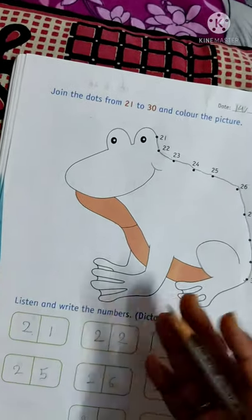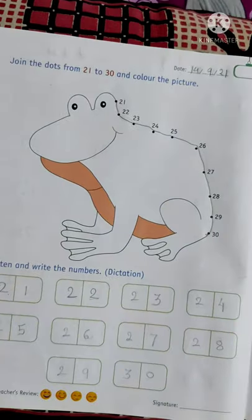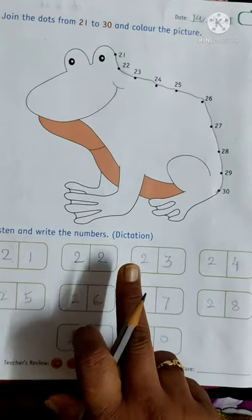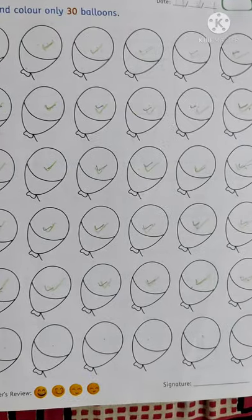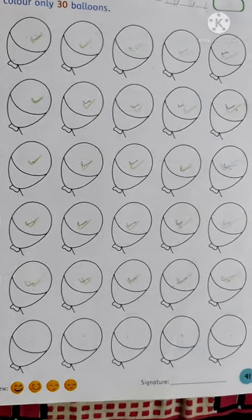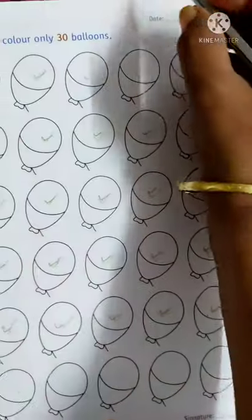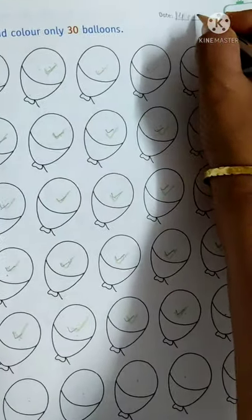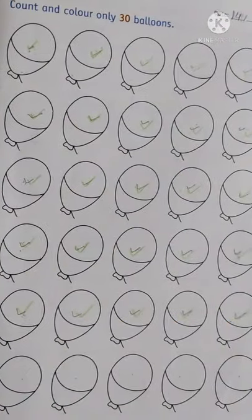See what is the outcome of the picture after joining the dots? It is a frog. Color the picture and send to me. Now come to the next exercise on page number 41, same date, 14th September 21.